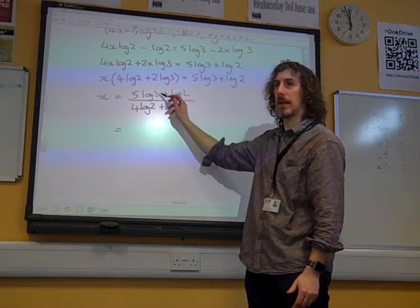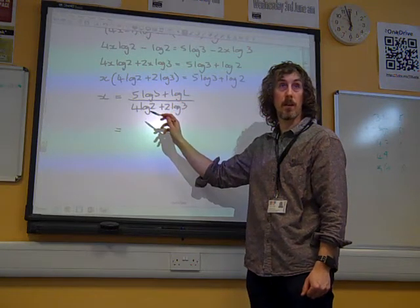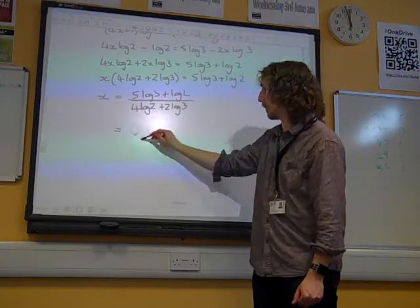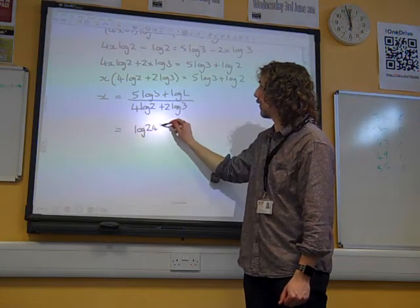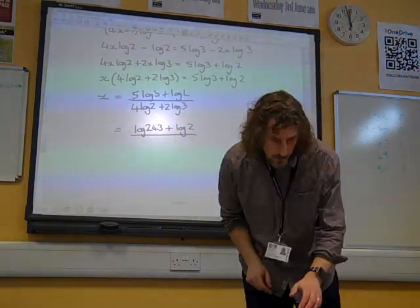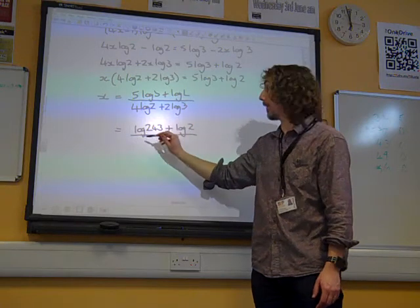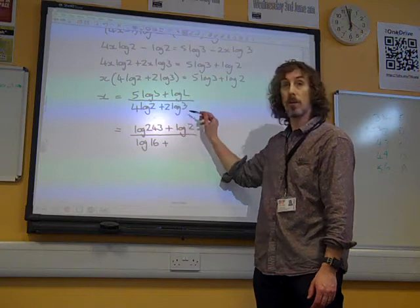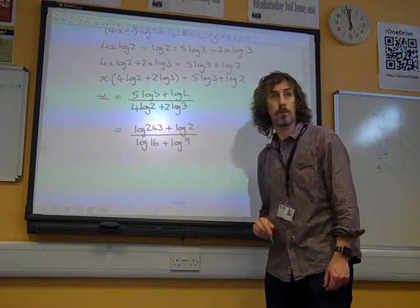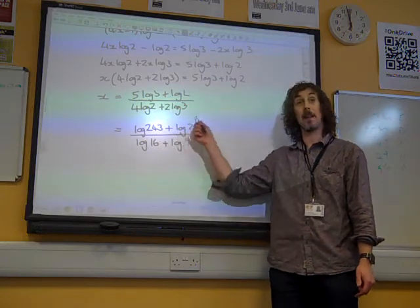That's what the form was asked for. So what have we got? We've got 5 log 3. That is a 3, by the way. So that's log of 3 to the 5. And 3 to the 5, you can check in your calculator, but it's 243. So that is log 243 plus log 2. And on this bottom line here, we've got 4 log 2. So that's log 2 to the 4, which is 16. Plus 2 log 3. So that is log of 3 squared.